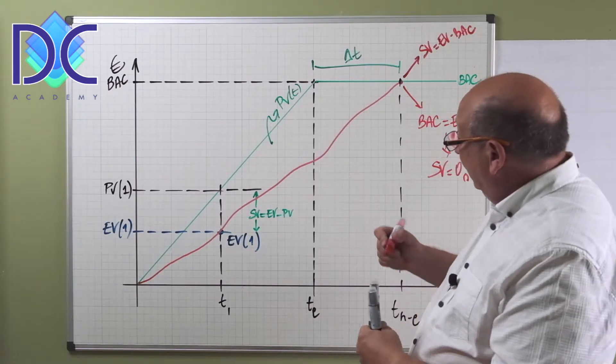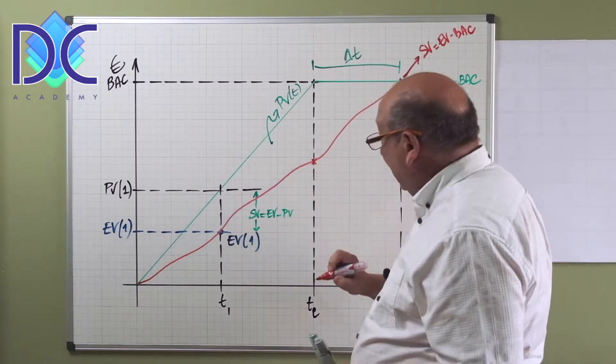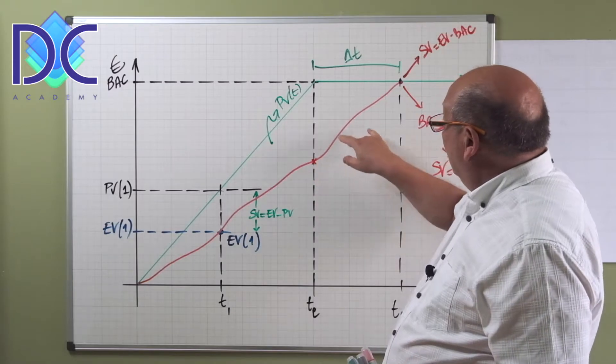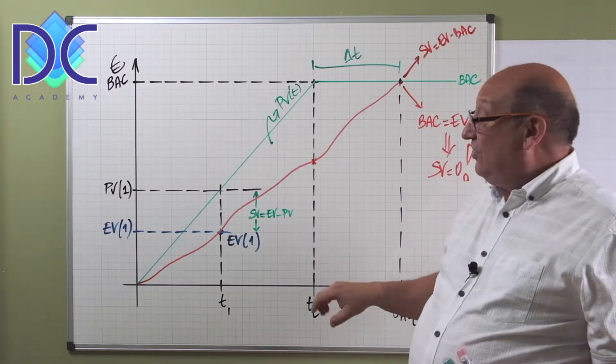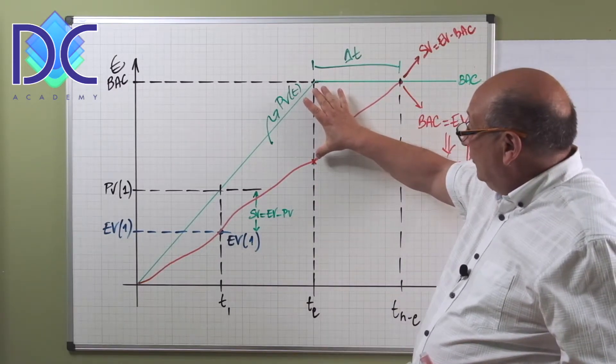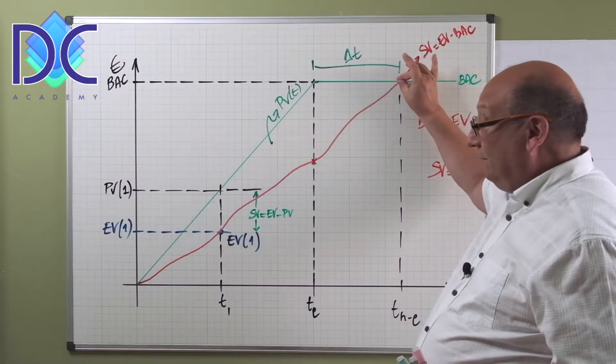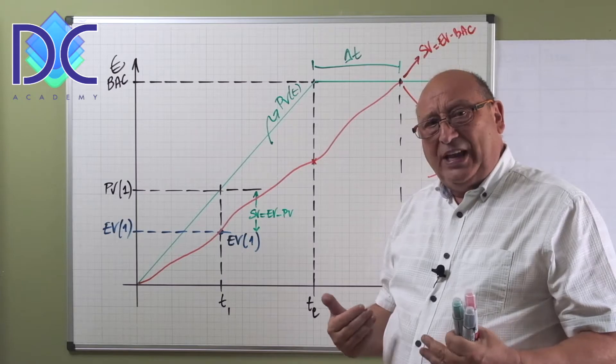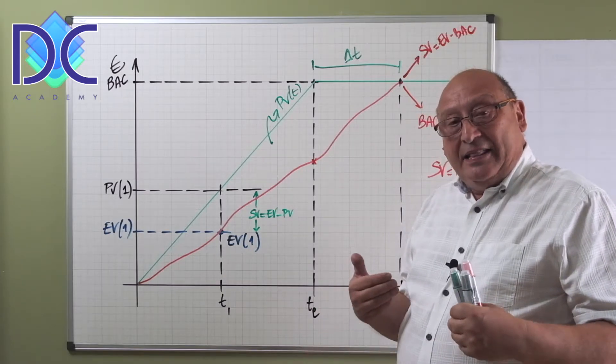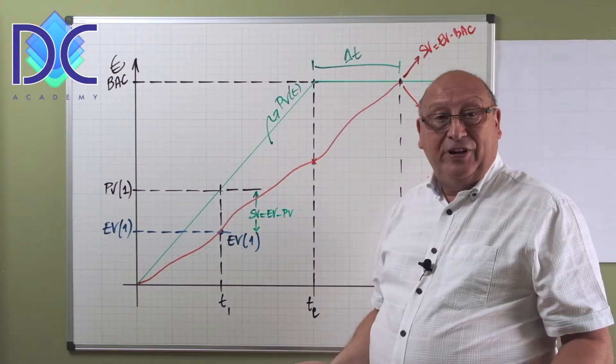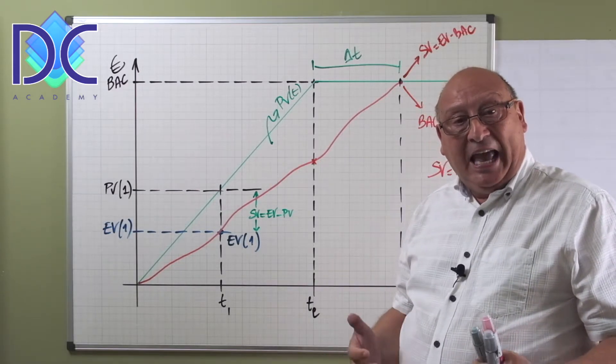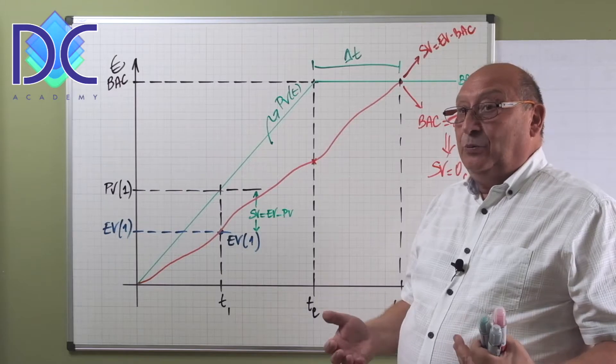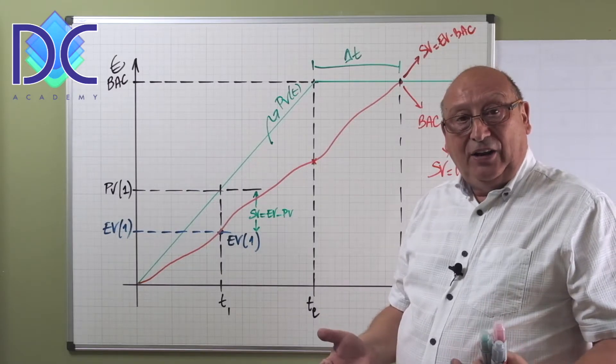This would mean that we are on time, but when we look at the time scale I see here a delta t, so I'm basically late. It's not correct, but my schedule variance is zero. Now what happens the moment that I arrive here at the expected duration of the project? Even when the time difference is still increasing, the schedule variance is decreasing to reach zero.